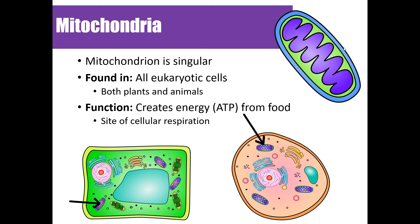The mitochondria are found in both plant and animal cells. Their function is where cellular respiration happens — converting food into ATP, or energy. The mitochondria have two parts: the inner membrane and the matrix. We'll discuss the anatomy of the mitochondria in more detail in unit three, our energetics unit.